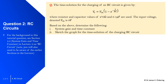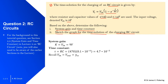In question two we have the time solution for the charging of an RC circuit in standard form: the voltage over the capacitor equals v in multiplied by one minus e to the power of minus t over RC. The resistor is 470 ohms, the capacitor is 0.1 microfarads, and the input voltage is 9 volts. Determine the system gain, time constant, and sketch the graph for the charging RC circuit.